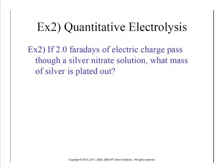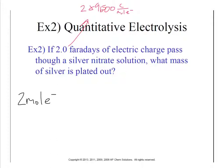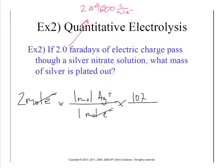Another way they might ask this is by referring to Faraday's — like 2.0 Faraday's. All that means is Faraday's constant times two: 2 × 96,500 coulombs per mole of electrons. Really that means we're starting with 2 moles of electrons. So: 2 moles of electrons × 1 mole of Ag per mole of electrons × 107.87 g per mole of Ag = approximately 215.74 grams of silver generated with 2 Faraday's.